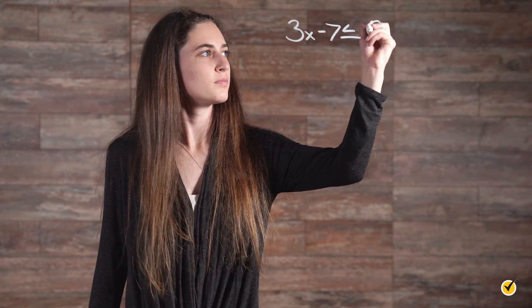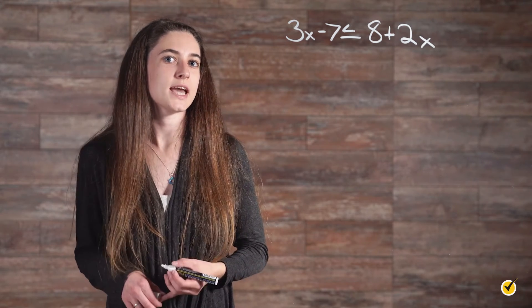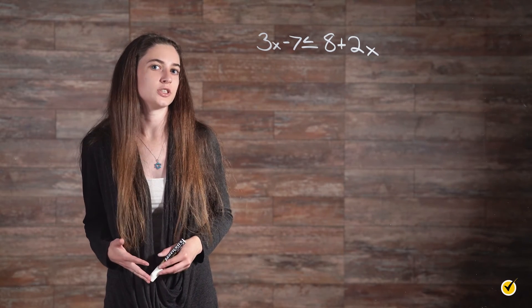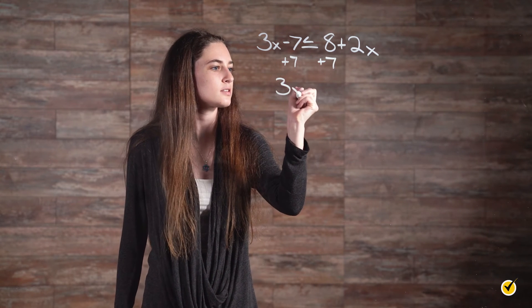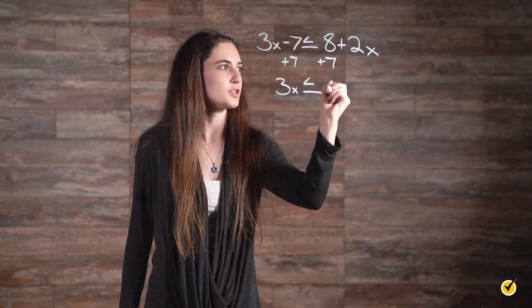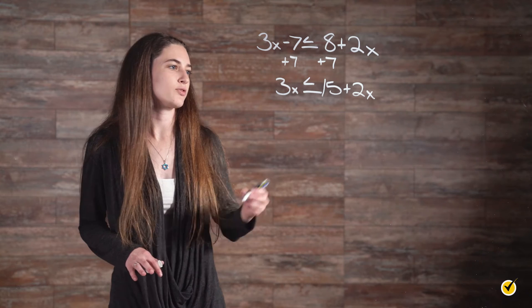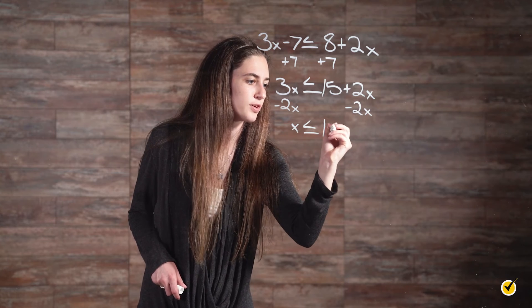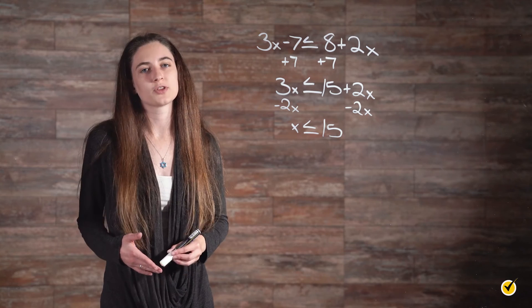Let's try a more complicated example: 3x minus 7 is less than or equal to 8 plus 2x. The first step is to solve for x as you would with any other equation. Start by adding 7 to both sides, which gives us 3x is less than or equal to 15 plus 2x. Now subtract 2x from both sides, leaving us with x is less than or equal to 15. That means any values of x that are 15 or lower will work for this inequality.